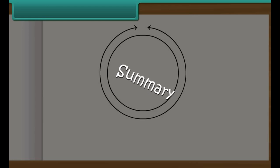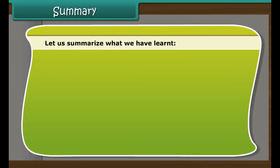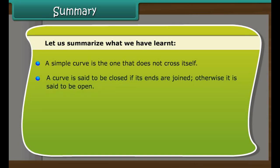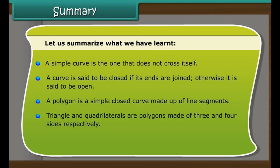Summary: Let us summarize what we have learned. A simple curve is the one that does not cross itself. A curve is said to be closed if its ends are joined, otherwise it is said to be open. A polygon is a simple closed curve made up of line segments. Triangle and quadrilaterals are polygons made of three and four sides respectively. A circle is the path of a point moving at the same distance from a fixed point.